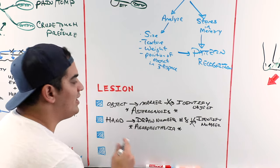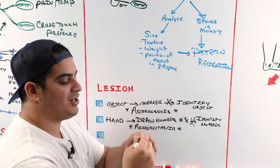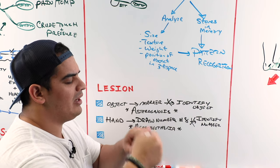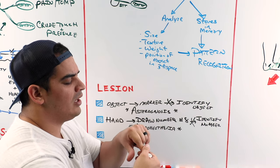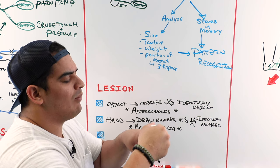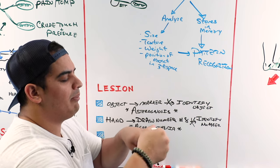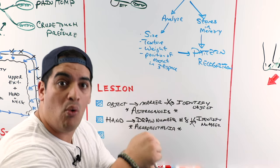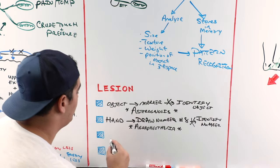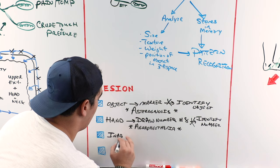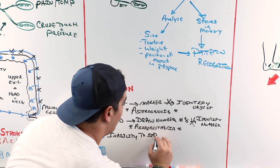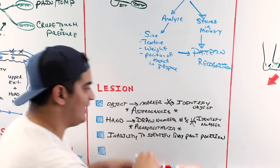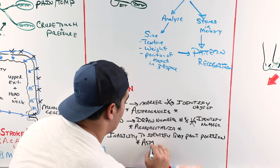Another test involves position sense. Have a patient close their eyes, move their finger up and down, and ask them to identify the direction — is the finger pointing up or down? If they can't tell you the direction that their body part is pointing, this is called astatognosis — the inability to identify body part position through sensory input.